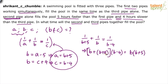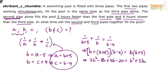Simplifying: 2B squared minus 8B plus 5B minus 20 equals B squared plus 5B. The 5B terms cancel, and subtracting B squared from both sides gives B squared minus 8B minus 20 equals zero.